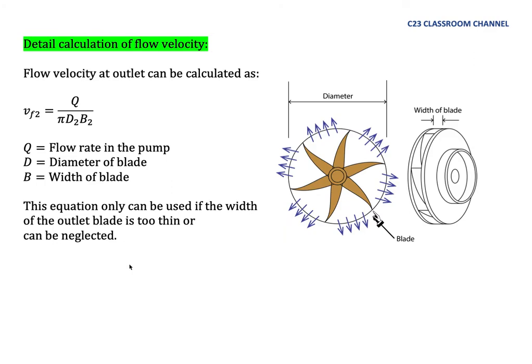Here I would like to give you a detailed calculation about flow velocity because we will have two conditions of blade design. For example, if we have an impeller and shroud like this, we must know that the width of blade is this area.